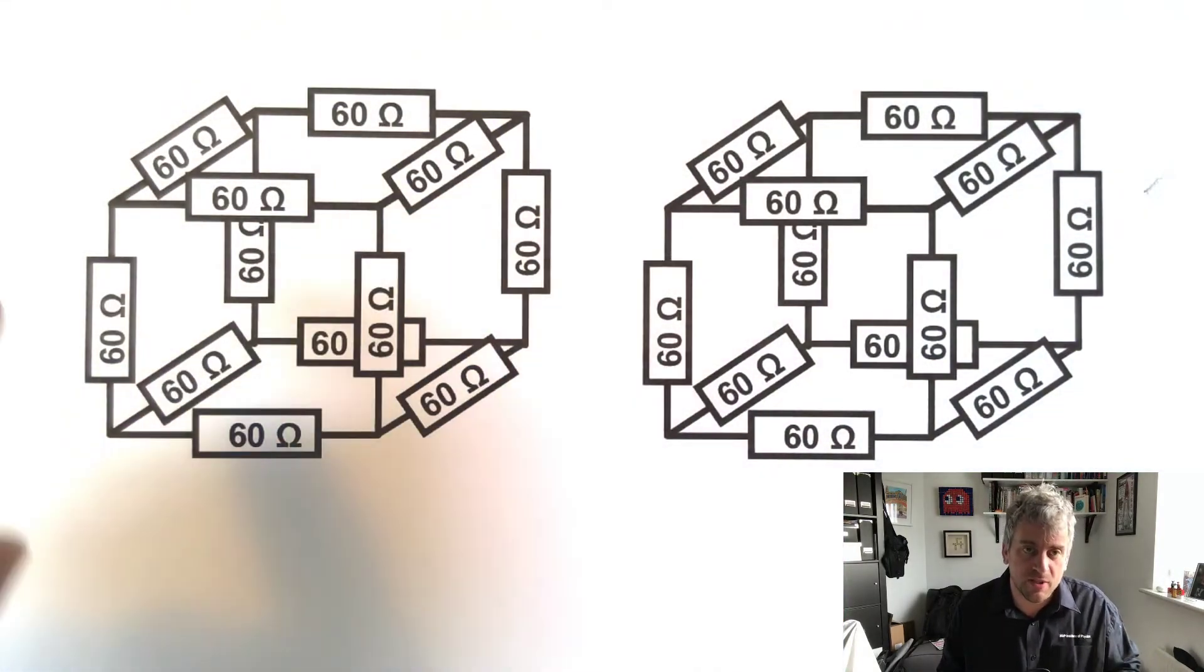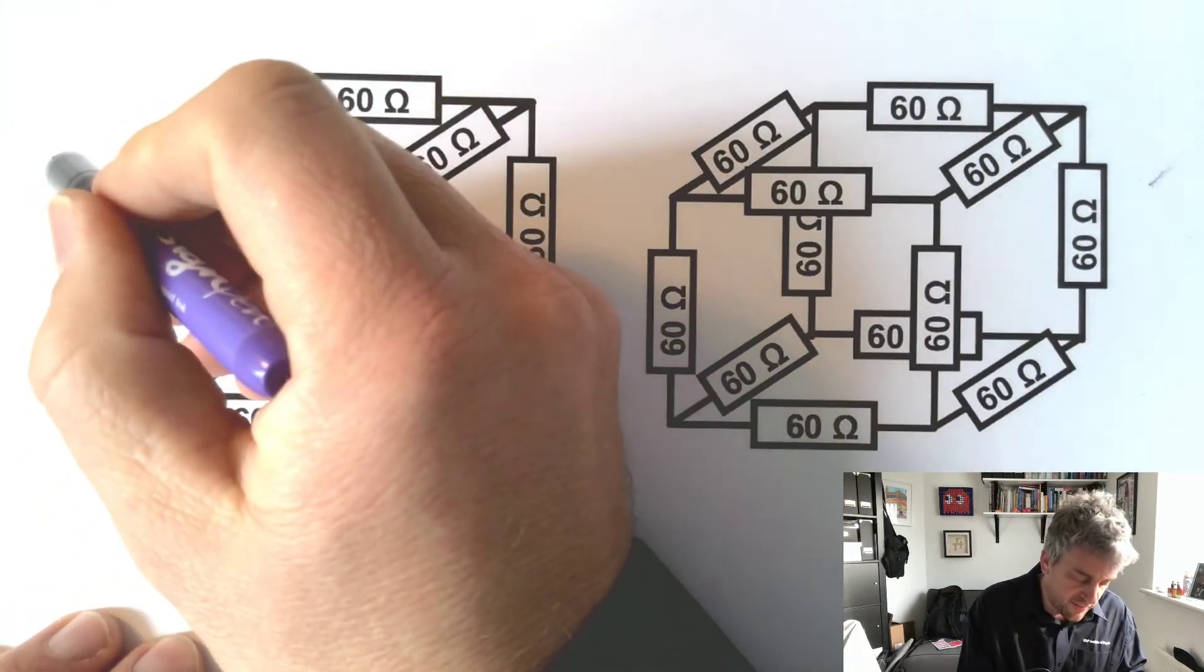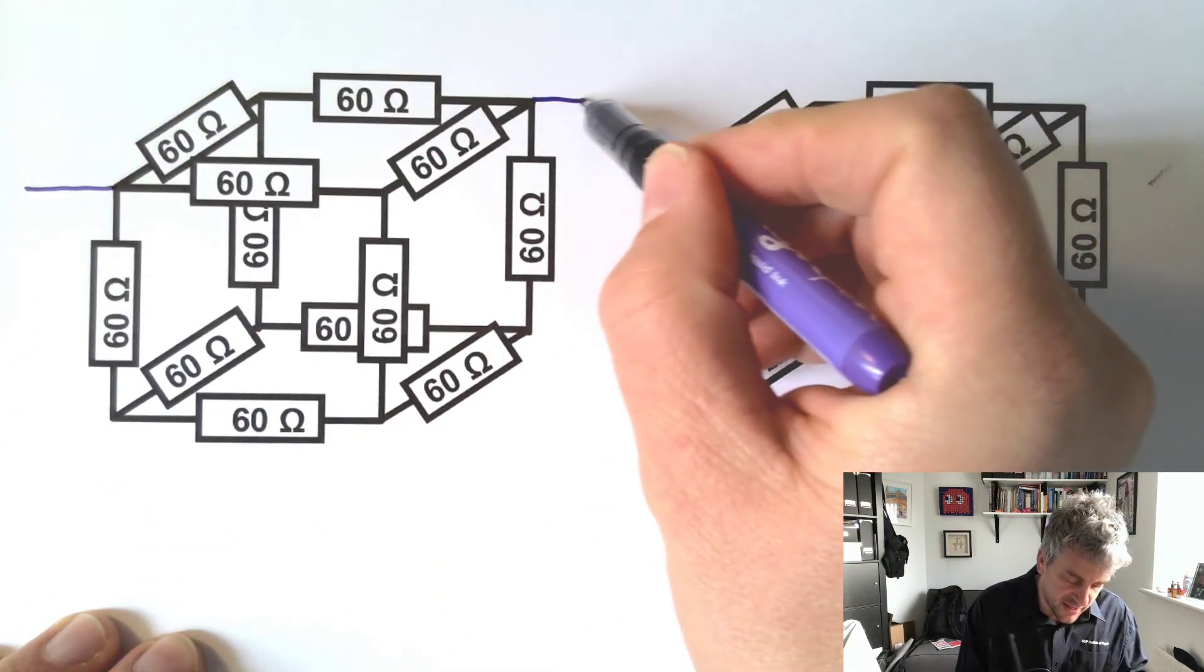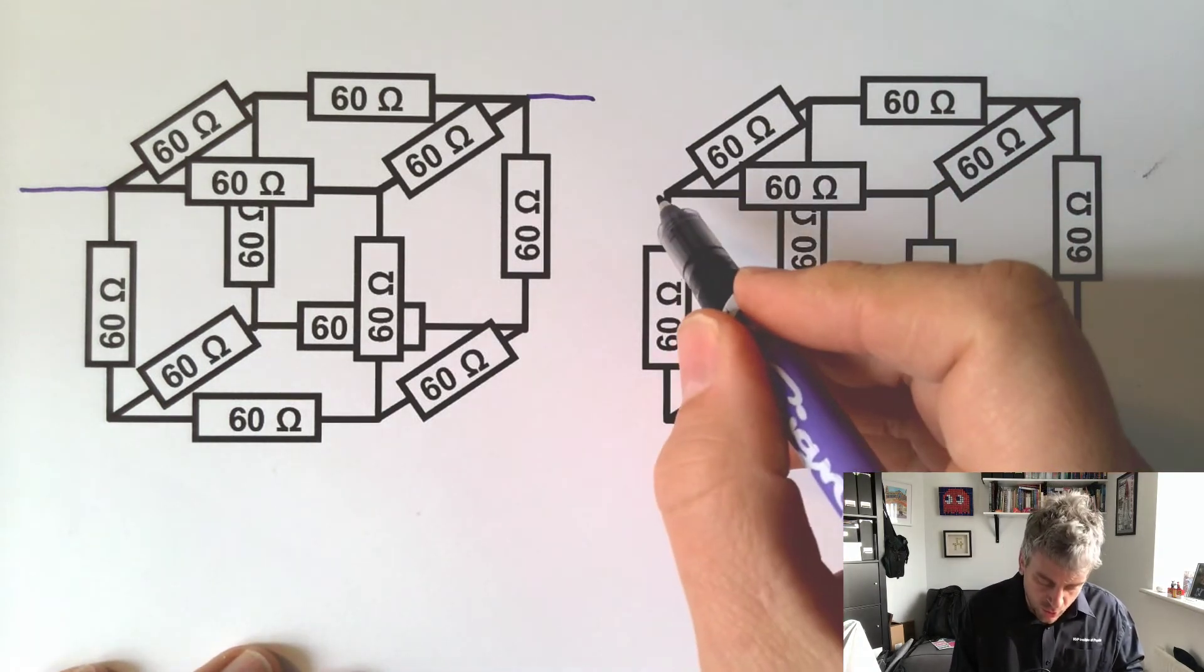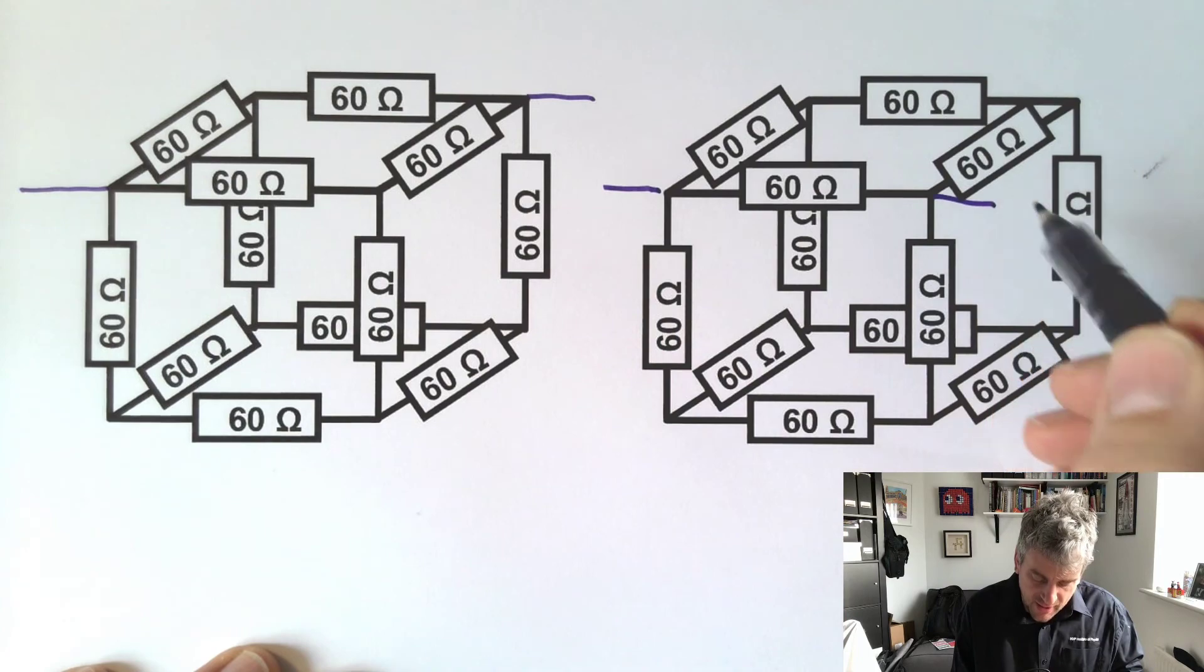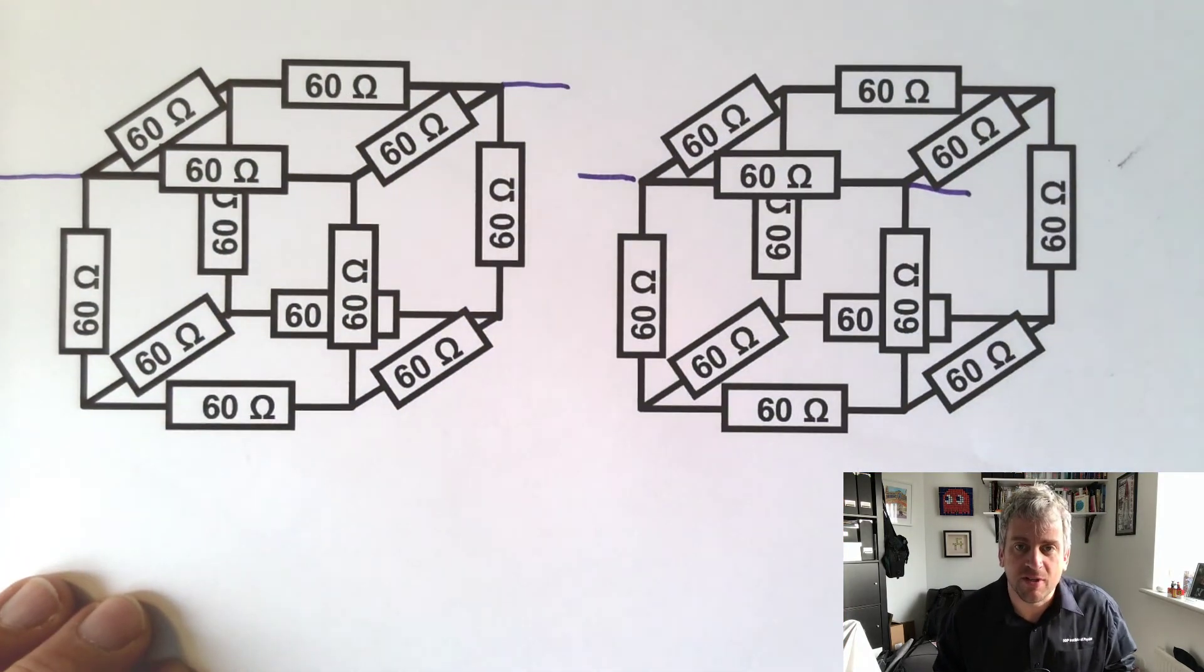What about this? So instead of thinking about it from being opposite vertices, what about if it was connected from here to here? What would happen in that situation? Or what would happen if you connected it from here to here? So what are the total resistances in either of those examples?